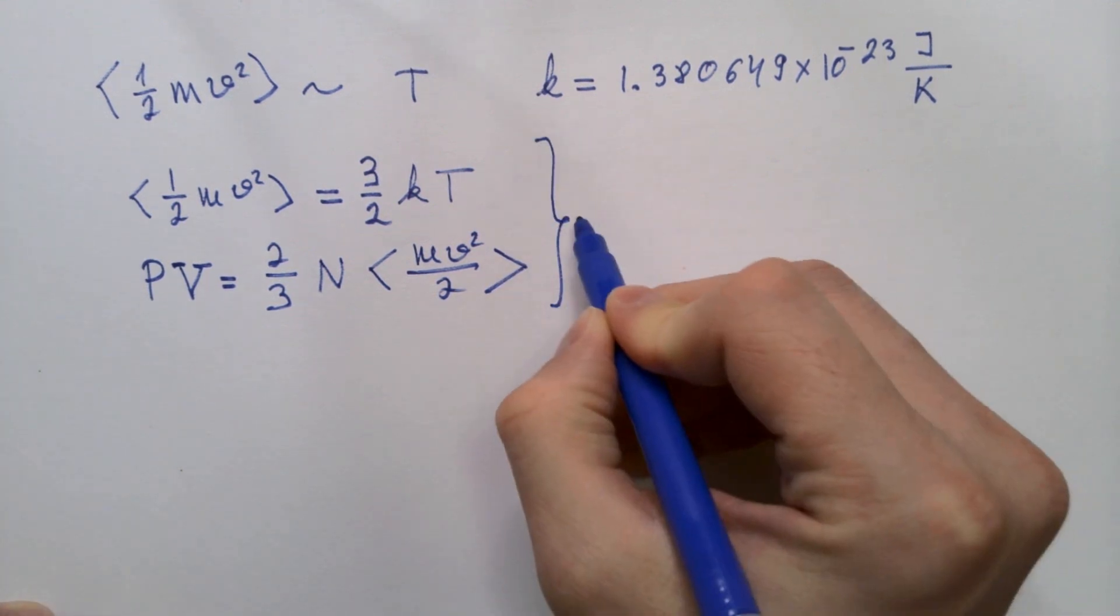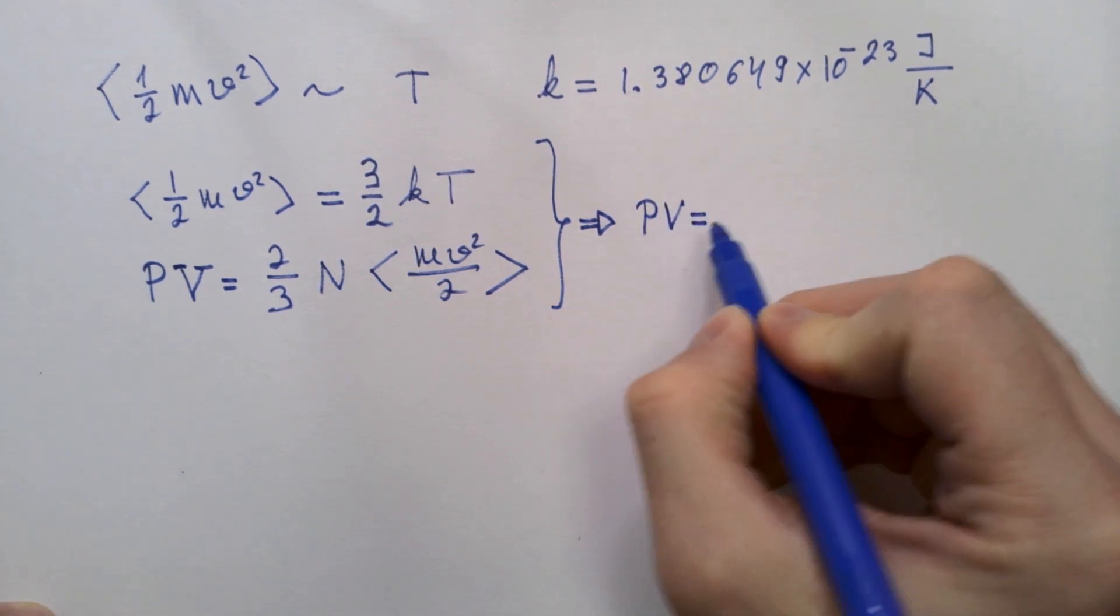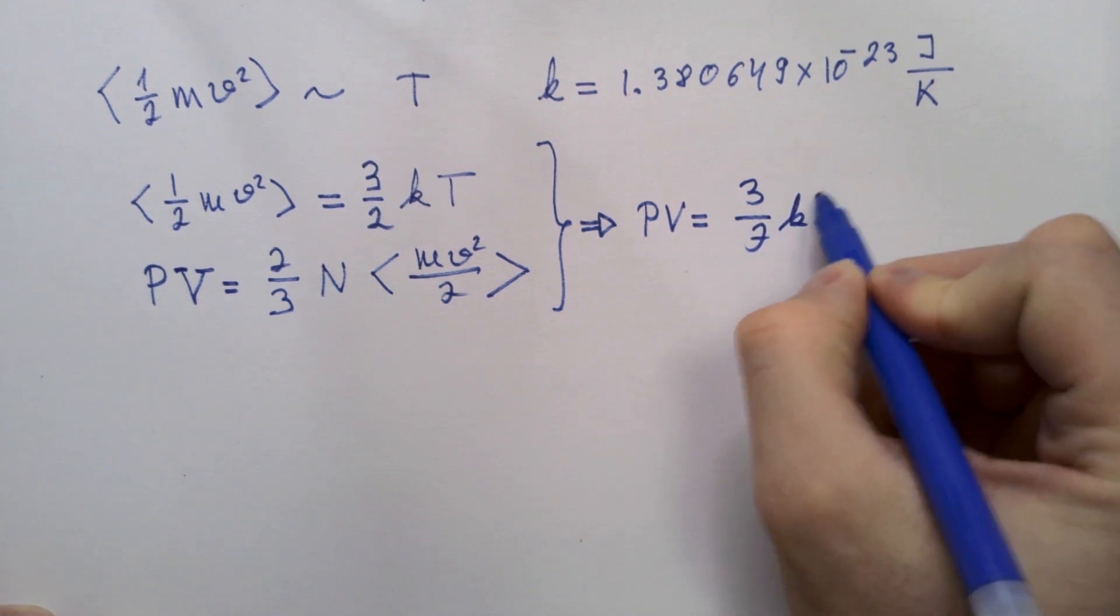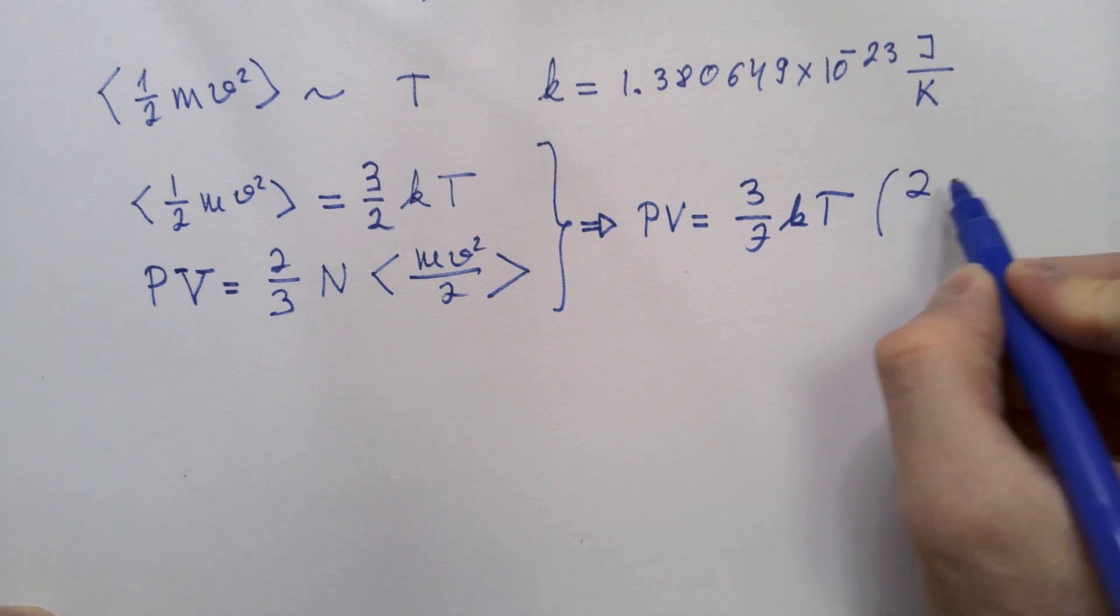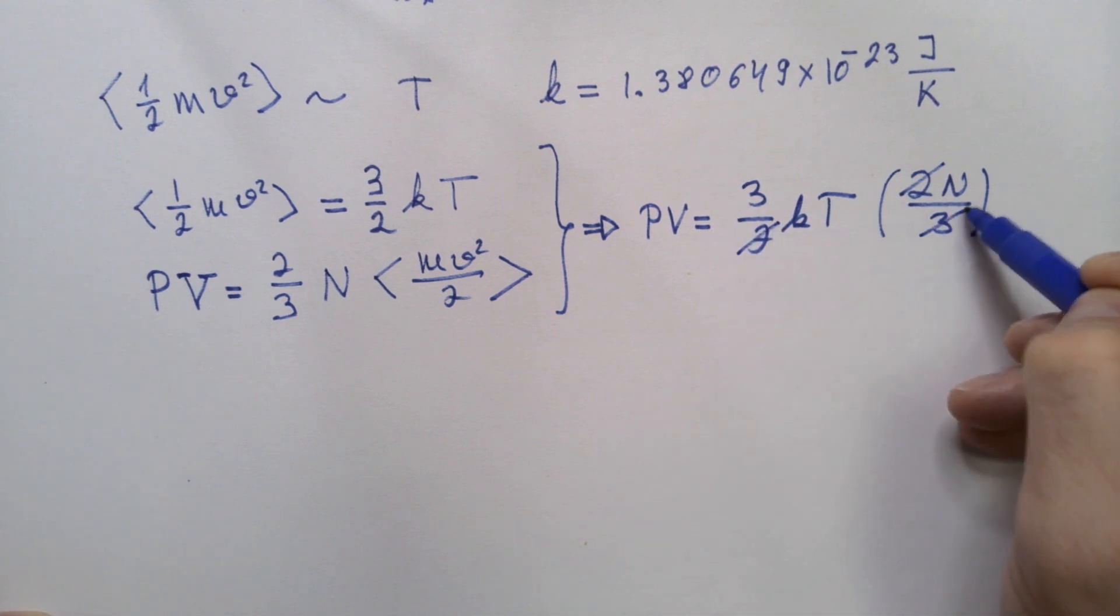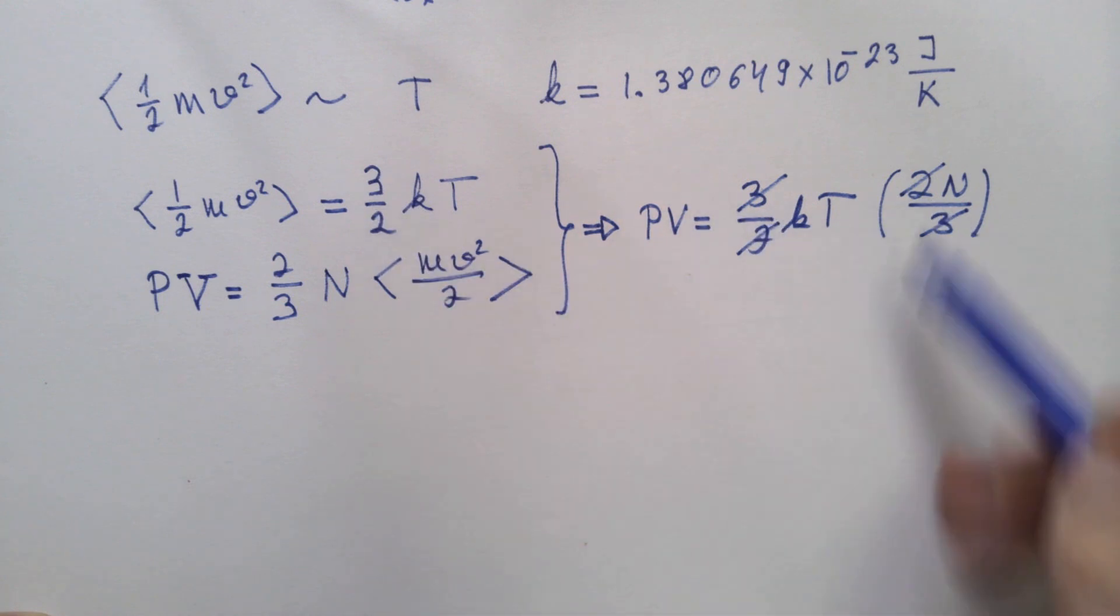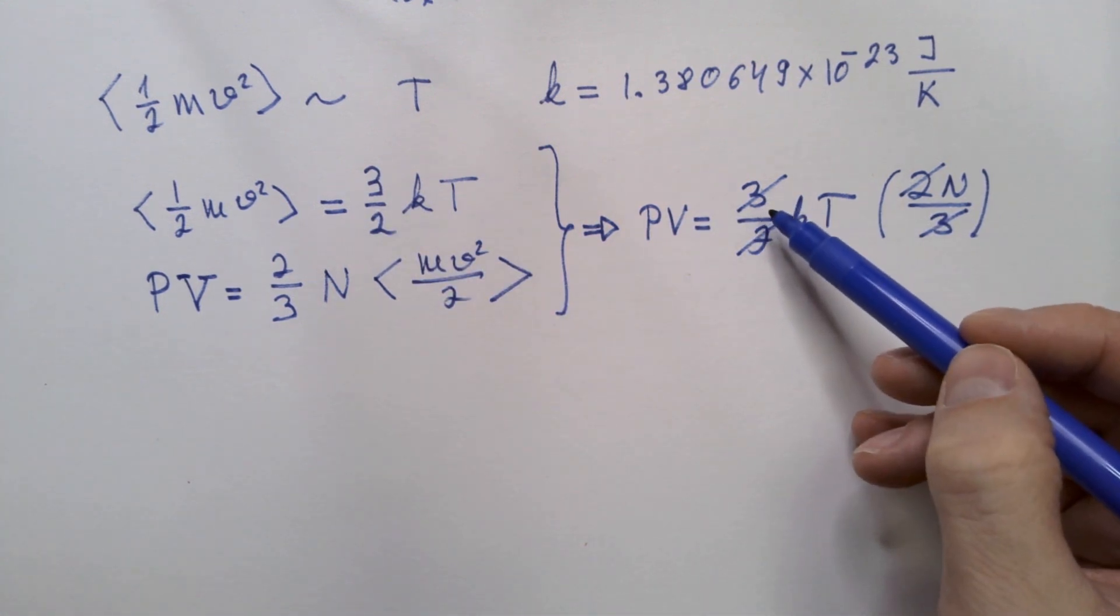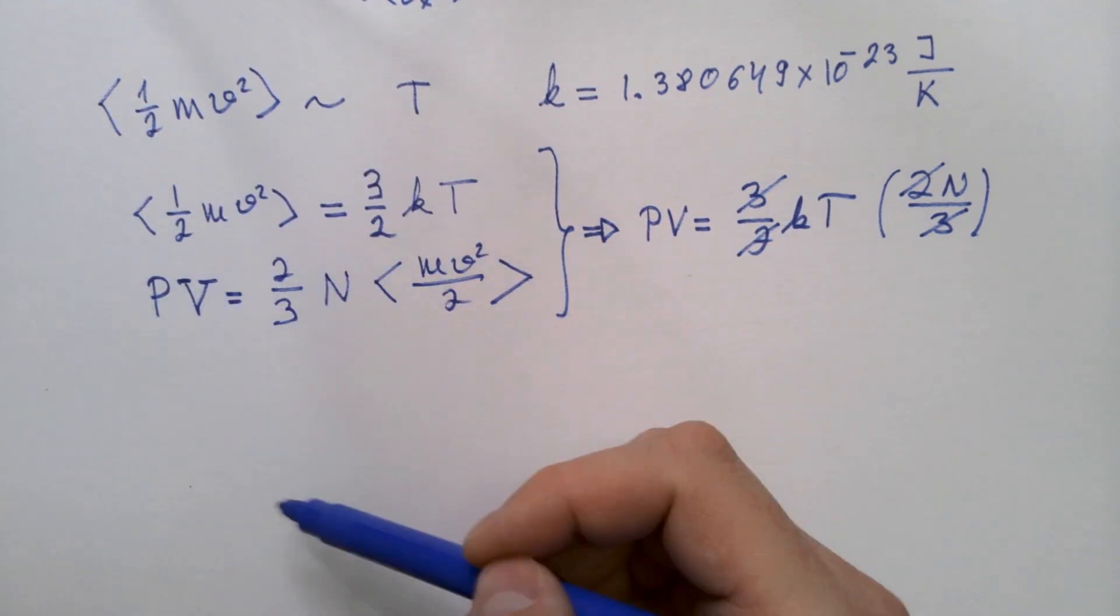Well, combining these two equations, we get that P times V is equal 3 over 2 kT, and we also have times 2n over 3. 2 and 2 cancels, 3 and 3 cancels. Now you see why this factor is very convenient, because we don't get any numerical factors when we combine expression for temperature with the expression for the pressure of a gas.